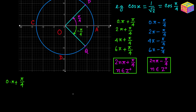If we rotate OP one full circle in the clockwise direction, the angle would be negative 2pi plus pi over 4. If we rotate it again one full circle clockwise, the angle would be negative 4pi plus pi over 4. We are already starting to see a pattern: it looks like a negative even multiple of pi plus pi over 4.